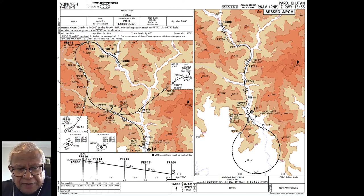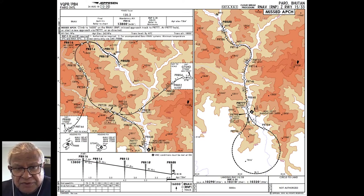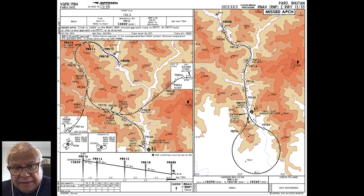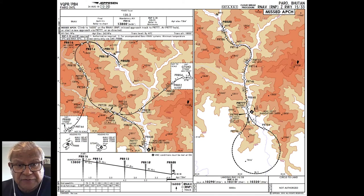Paro is surrounded by peaks as high as 18,000 feet. It's in a valley, and the approach from either direction is very difficult. Only captains who are specially licensed can fly there — apparently only a few dozen pilots have that license — and first officers can't land a plane there. It always has to be the captain.